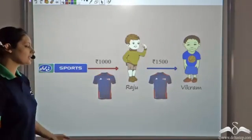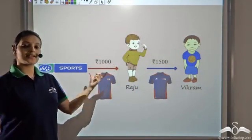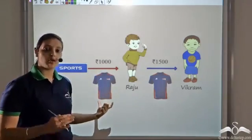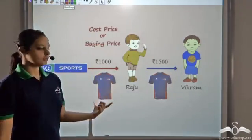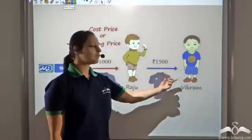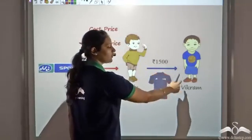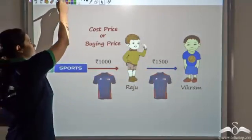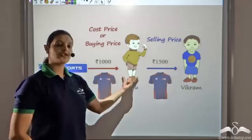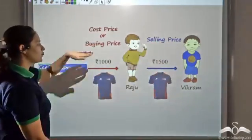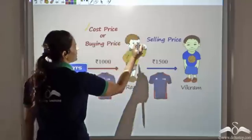This 1000 rupees is the buying price of the t-shirt — that is, Raju bought this t-shirt for 1000 rupees, so this is the cost price or buying price of Raju. Now Raju sells it to Vikram for 1500 rupees, so this 1500 rupees is the selling price of Raju. The price at which you buy things is your cost price, and the price at which you sell things is your selling price.